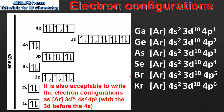Next we have bromine which is Ar4s2 3d10 4p5. And to finish up period 4 and the 4p sub level we have the noble gas krypton, with the electron configuration Ar4s2 3d10 4p6. That covers the first 36 elements of the periodic table, from atomic number 1 which is hydrogen to atomic number 36 which is krypton.